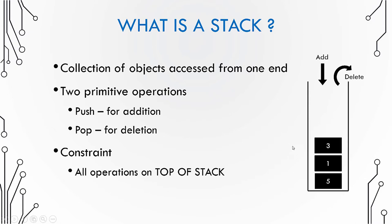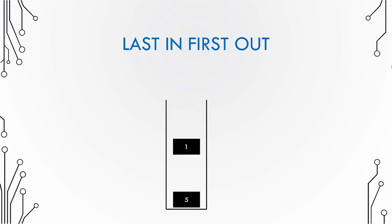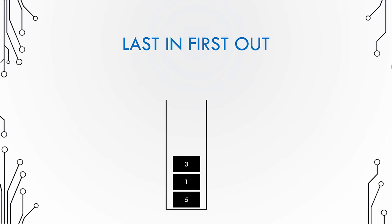A stack is also called last in first out. Why? Because the object that goes in last will be out first. We have a stack of three elements. When we push the number seven onto the stack, it goes on top. Seven is the last element to go inside, so if we pop it, seven will go out first. Last in and first out.